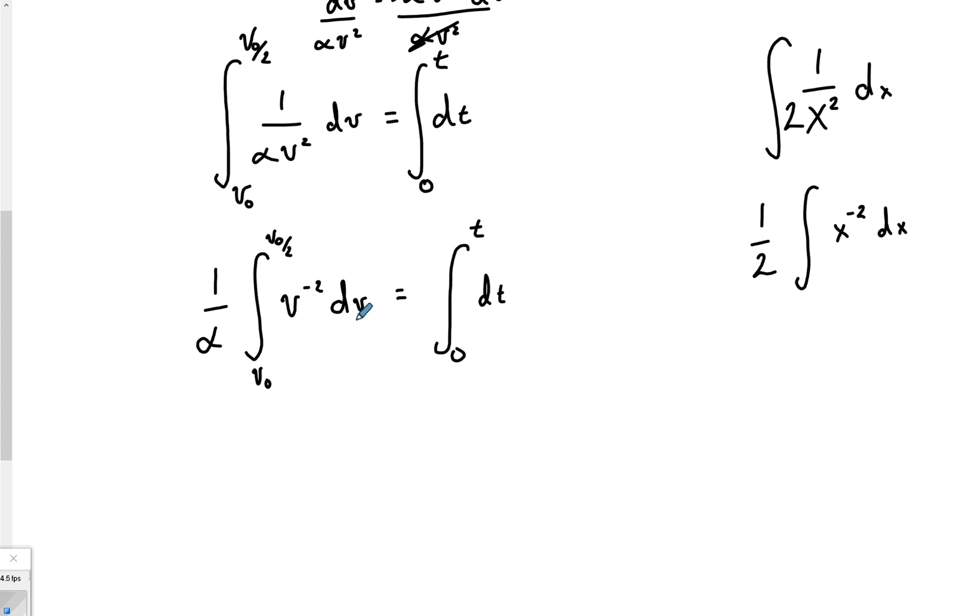So if we want to integrate this side over here, think about what you do. Well, we can go back to this other thing. What do you do to x negative 2? x negative 2, you add 1, which is negative 1, and then you divide by it. So that's exactly what we're going to do over here. We're going to do the exact same thing.